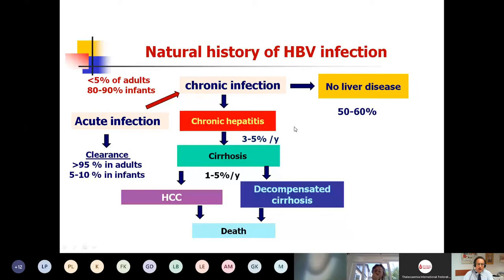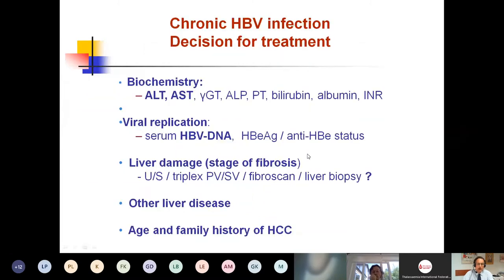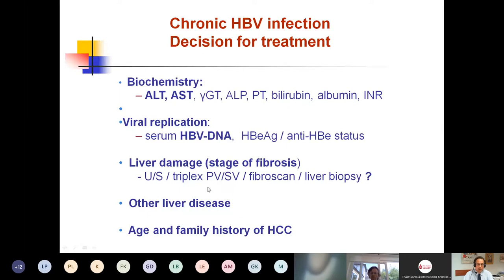Not everyone infected with hepatitis B progresses to chronicity: less than 5% of adults progress, but more than 70–80% of infants do. If chronicity develops, patients may have no liver disease or chronic hepatitis. A decision for treatment of hepatitis B should be based on: elevation of aminotransferases, viral replication (HBV DNA in serum), liver damage, and assessment of fibrosis by FibroScan or liver biopsy. Ultrasound and triplex are also used to confirm presence or absence of cirrhosis. Other liver disease, patient age, and family history of hepatocellular carcinoma should all be taken into account.